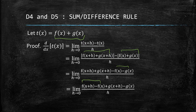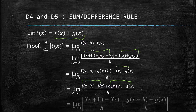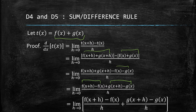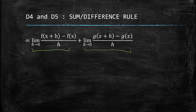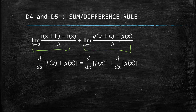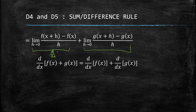Next, we rearrange and group all terms representing f and all terms representing g. Because limit laws allow us to separate, we get [f(x+h) − f(x)] / h plus [g(x+h) − g(x)] / h. Taking the limit of each term, and recognizing that each is the definition of a derivative, we obtain f′(x) plus g′(x) — the derivative of f(x) and the derivative of g(x).